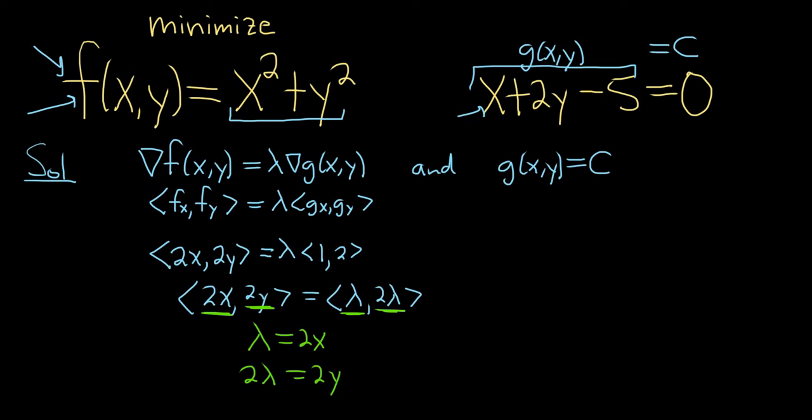Okay, so how you proceed here is up to you. I'm a really big fan of matching. I feel like that makes things easier. So here we have 2 lambda, here we have lambda. Let's multiply the first equation by 2. That gives us 2 lambda equals 4x, right? Multiplying both sides by 2, so 2 lambda equals 4x, and the bottom we have 2 lambda equals 2y.